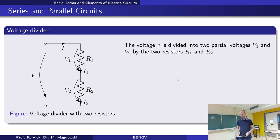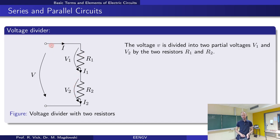We now come to the last topic for today: current and voltage dividers. For the voltage divider, we need a configuration where voltage can be divided — for example, two resistors in series. As we've said, with two resistors in series, the same current flows through both, and the total voltage drop splits into partial voltages V1 and V2.